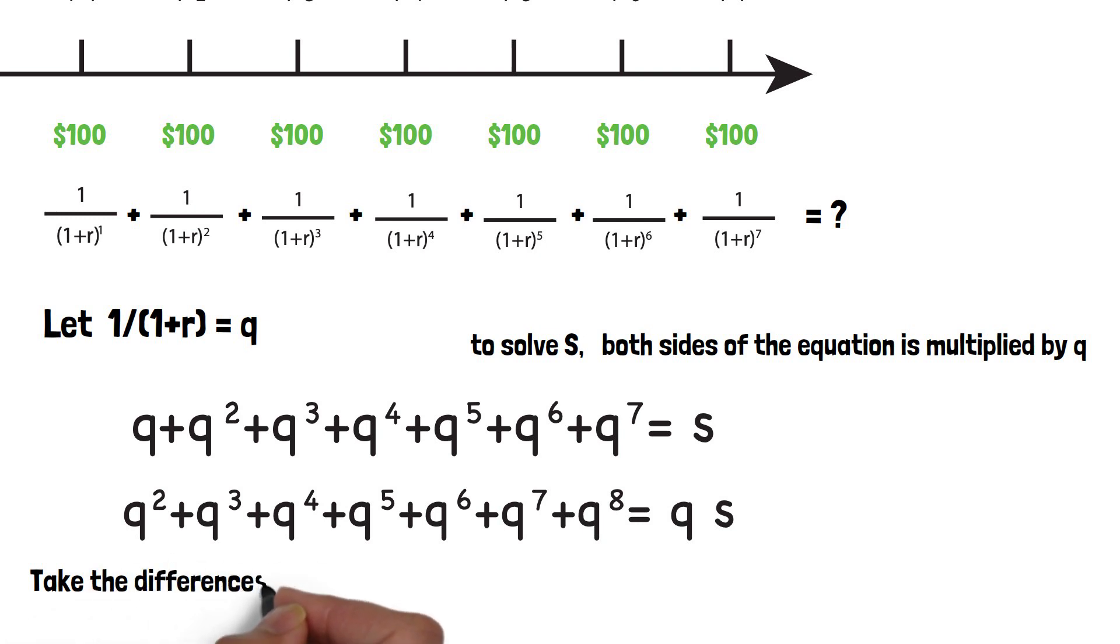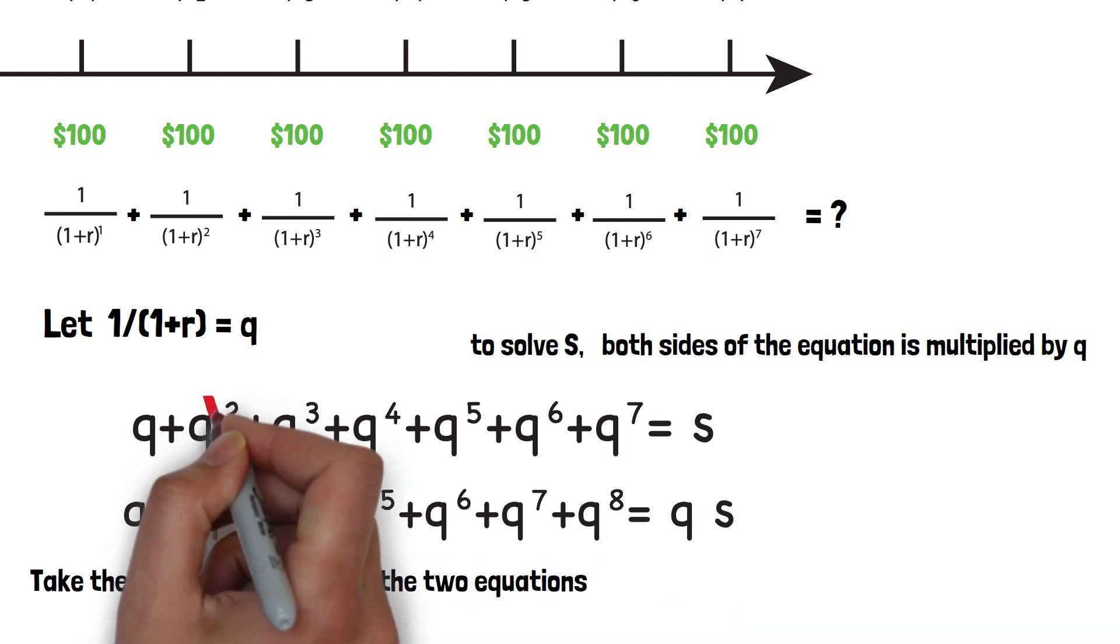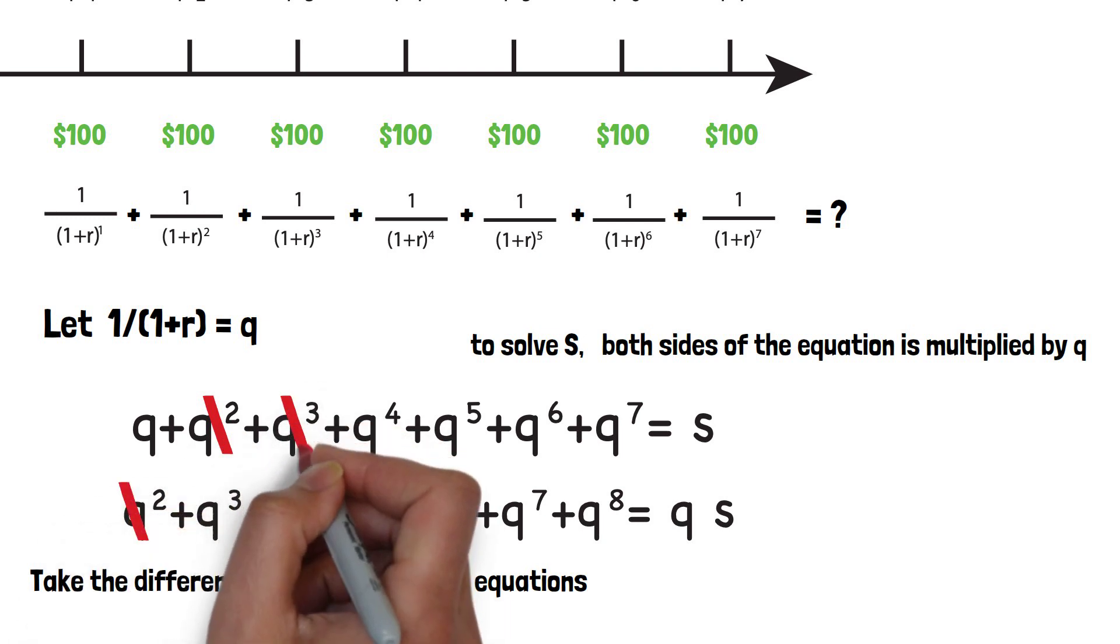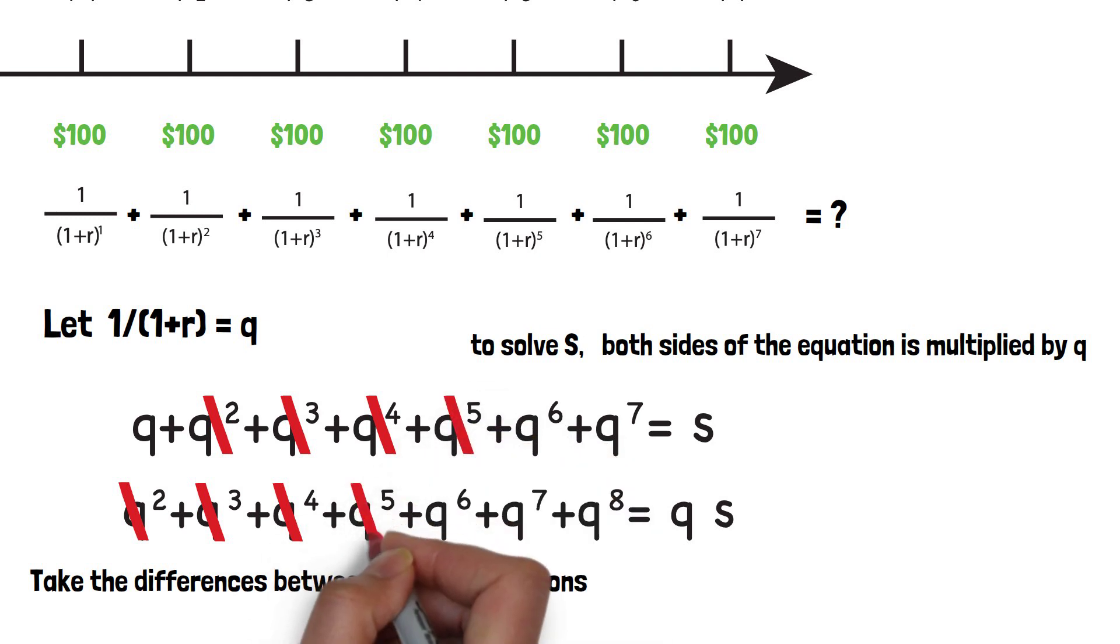Now let's take the difference of the two equations. On the left side, you notice that they have a lot of common terms. Those common terms will be cancelled out.